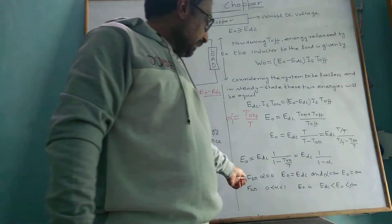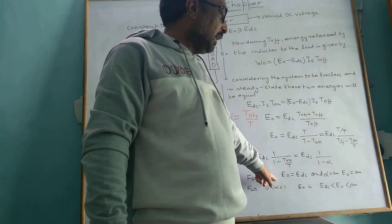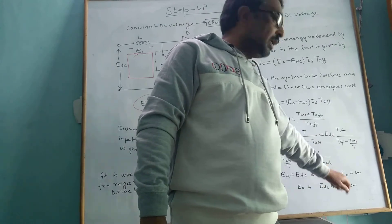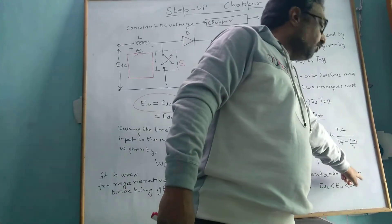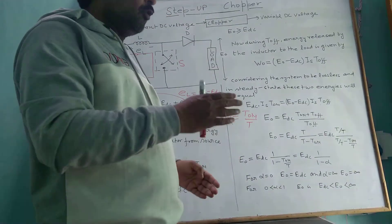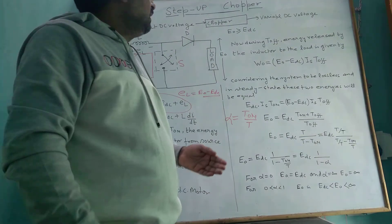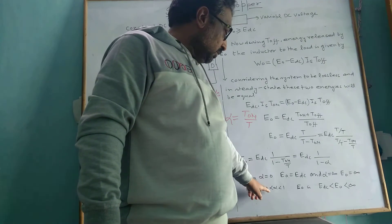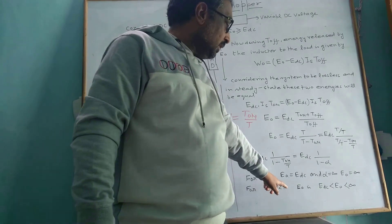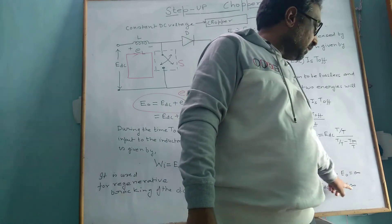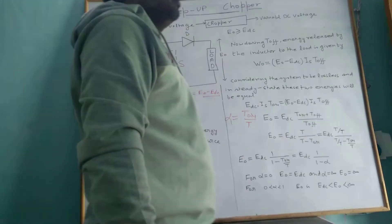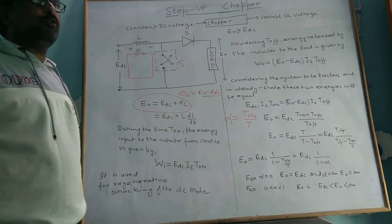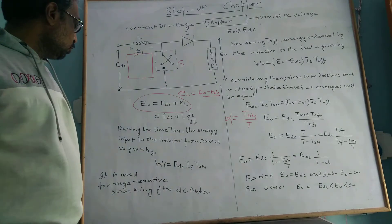If we take alpha equals 0, then E₀ equals E_DC. If alpha approaches 1, E₀ approaches infinity. This means output is always greater than input. For alpha from 0 to 1, E₀ ranges from E_DC to infinity. This is step-up chopper. Step-up chopper is used in industry for regenerative braking in DC motors. This is all about step-up chopper, thank you.